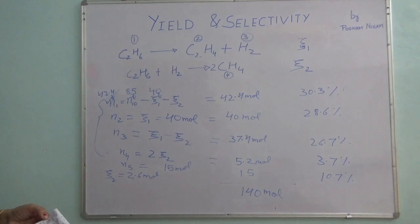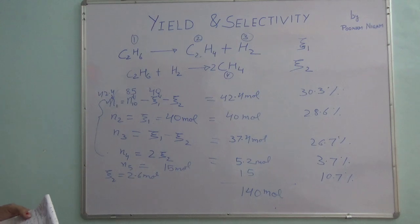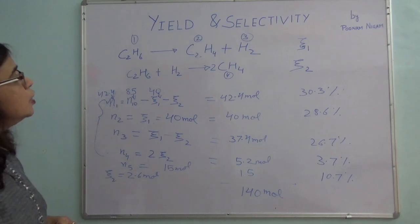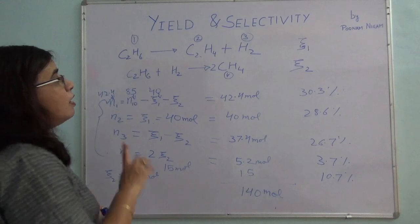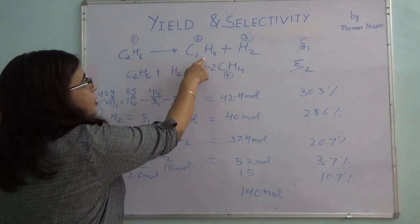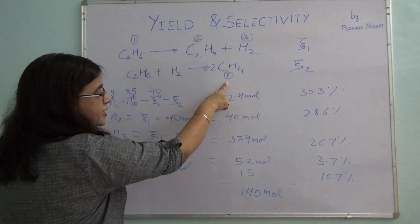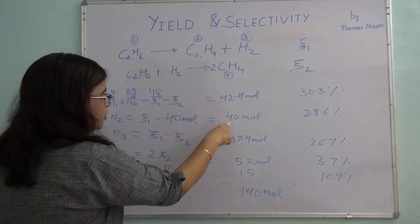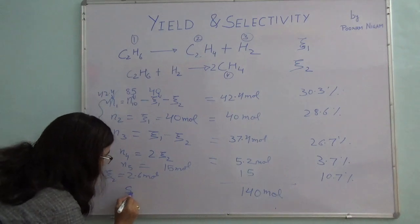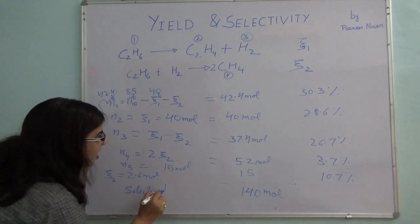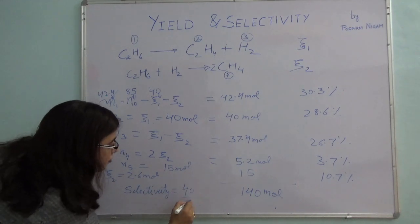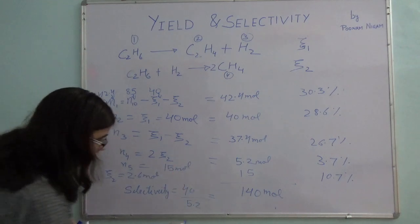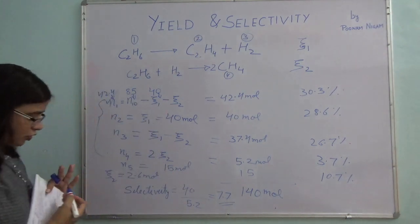One small part of this question asks for the selectivity of ethylene to methane. Selectivity is the amount of desired product upon amount of undesired product. So selectivity = N₂ / N₄ = 40 / 5.2, which comes out to be 7.7.